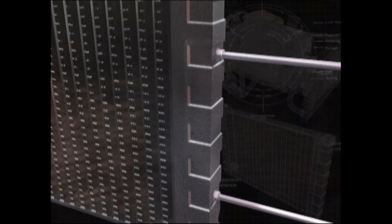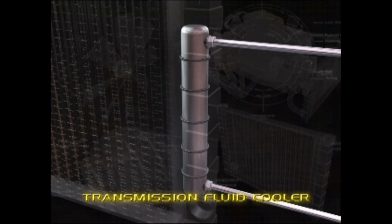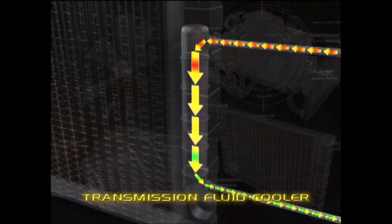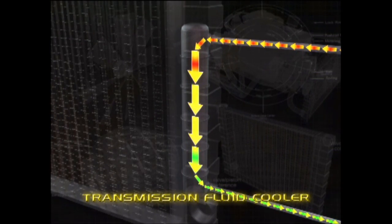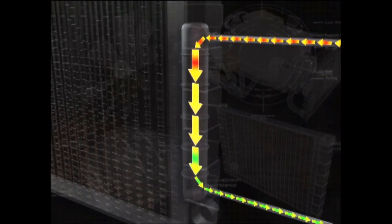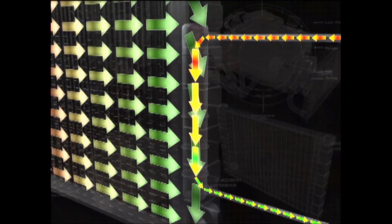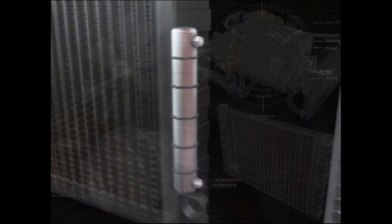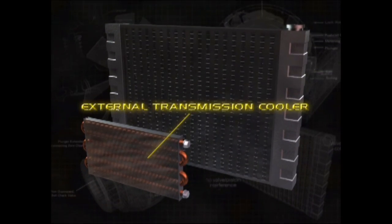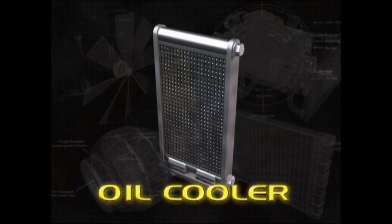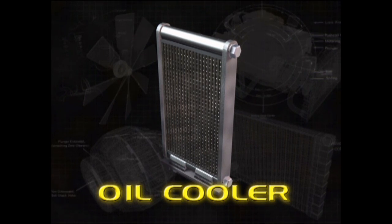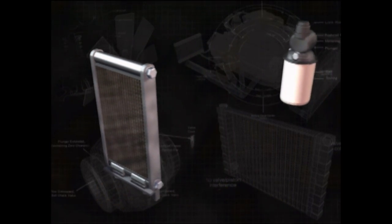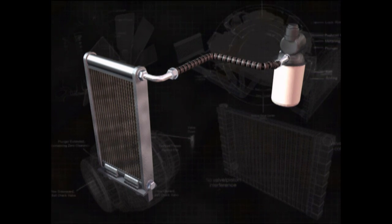Cars equipped with automatic transmissions typically have a transmission fluid cooler located inside the radiator. Fluid is pumped from the transmission through a small tank mounted inside one of the radiator's main tanks. Transmission fluid operating temperatures are much hotter than radiator temperatures, so the hot radiator coolant actually cools the transmission fluid. In a cross-flow radiator, the transmission cooler is located on the radiator cap side; in a downflow design, it's located at the bottom. Transmission coolers are sometimes mounted outside of the radiator. Many high-performance engines also have an oil cooler — a heat exchanger that looks like a small radiator and uses airflow to cool engine oil.